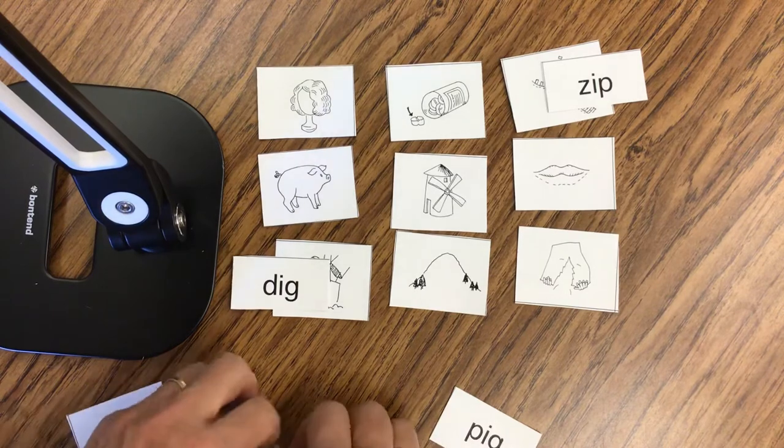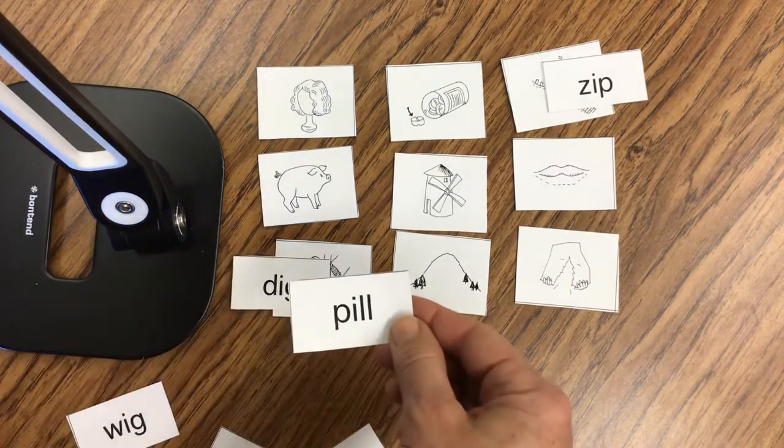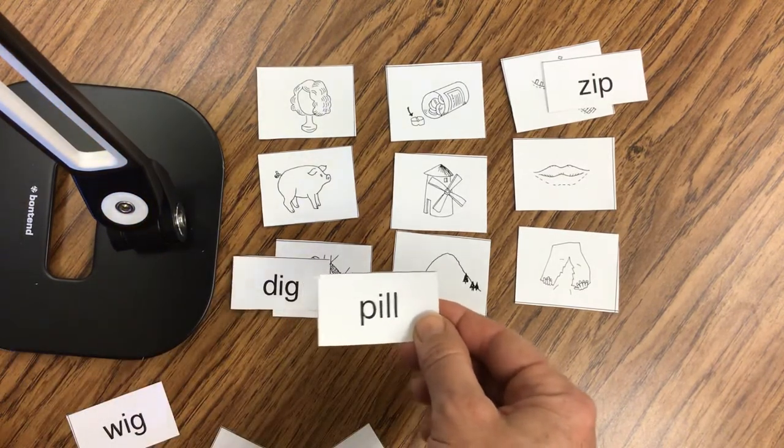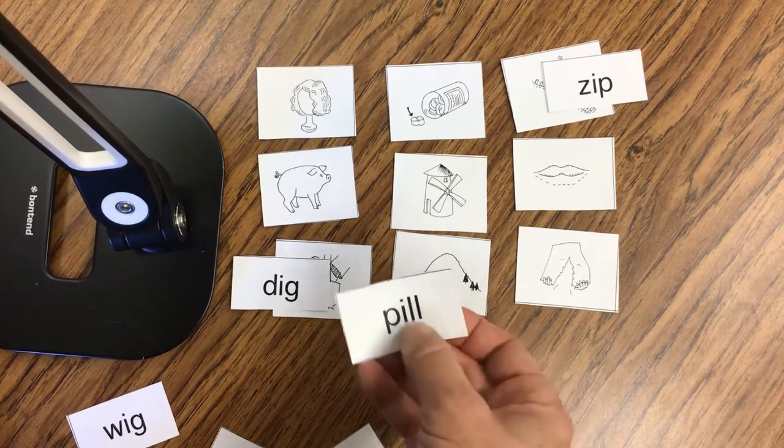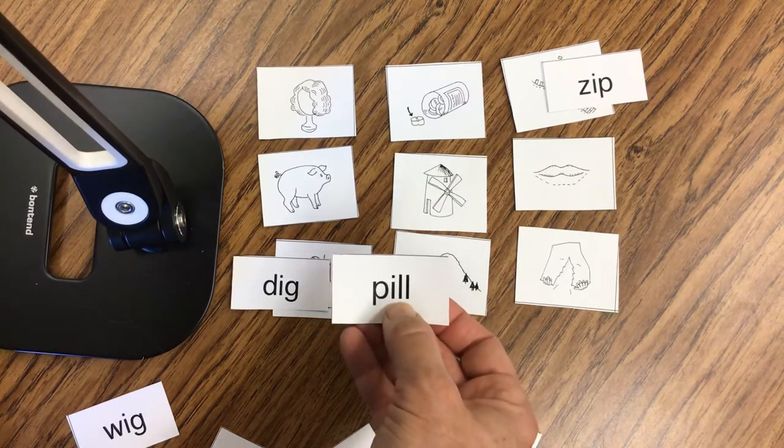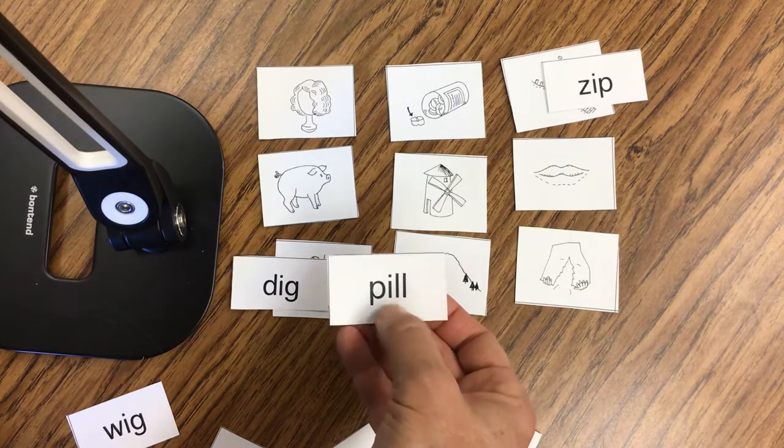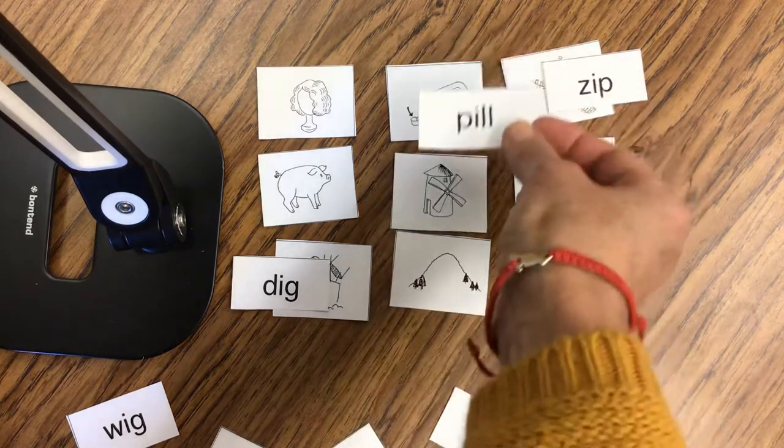And let's try this one. I see a P at the front. So I know it's going to start with P. And the rhyming word family is ill, p-ill, pill. So that will go there.